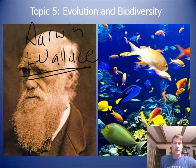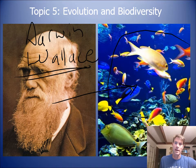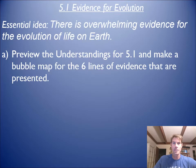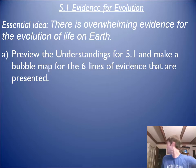Darwin is the person who explained why we see all these amazing colors and all this variety — like you see these fish here swimming in this coral reef. If you preview the understandings, there are actually five basic lines of evidence that we have for evolution.